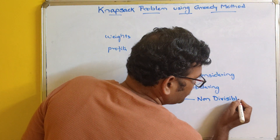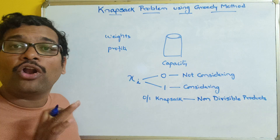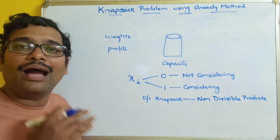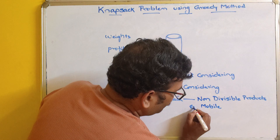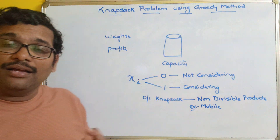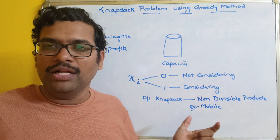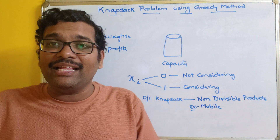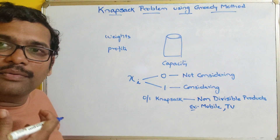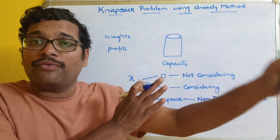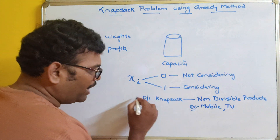Zero-one knapsack is used mainly for non-divisible products. Non-divisible products means either we have to consider the full weight or we may not consider it — some portion of the weight can't be inserted into the sack. For example, mobiles: we can only insert the complete mobile into the sack; we can't insert a portion of it. Similarly, a television — we can't insert some portion of a television into the sack. These are all non-divisible products, and for those we use the zero-one knapsack.